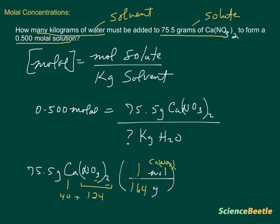Our gram units are going to cancel. What we'll do is we'll take the mass, 75.5, and we'll divide it by the molar mass, which is 164, and that gives us a mole number for this particular problem of 0.460 moles of Ca(NO3)2.